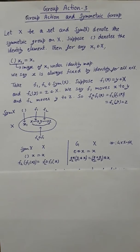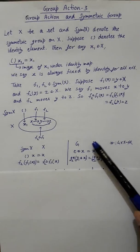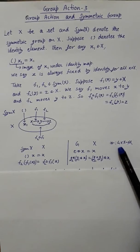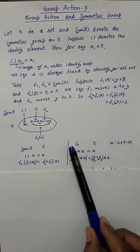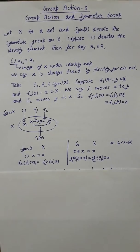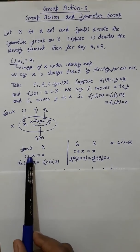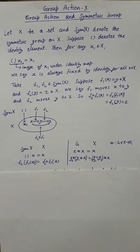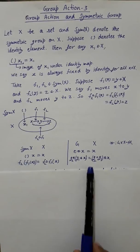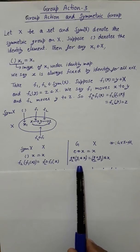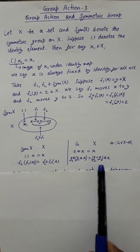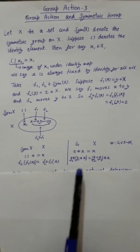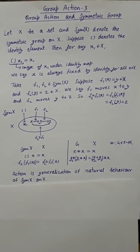Group action is nothing but a generalization of this property. Suppose we have a set X and a group G, with a map star from G cross X to X. The axioms are: the identity e acting on x gives x, and g1 acting on x followed by g2 acting on the result equals g2·g1 acting on x directly. So group action generalizes the behavior of Sym(X) on X.